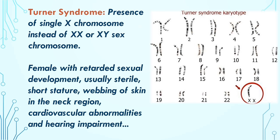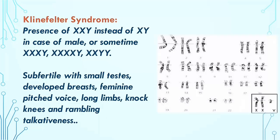In Klinefelter syndrome, there is presence of XXY instead of XY in males, and sometimes XXXY, XXXXY, or XXYY. The affected male can be subfertile with small testes development. There can also be development of breast tissue, feminine pitched voice, and long limbs with knock knees. They can often have a rambling talkativeness.